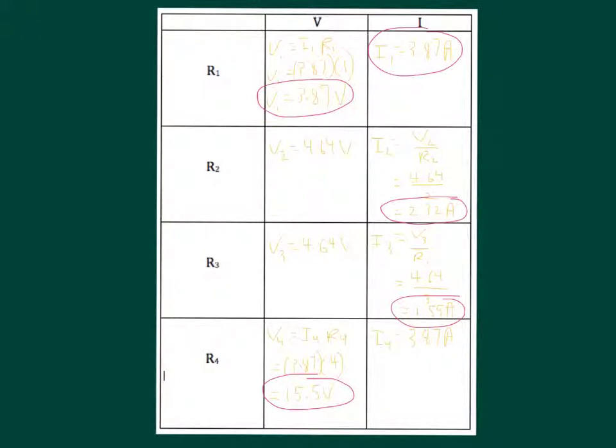We have our V1, I1, V2, I2, V3, I3, V4, and I4. By putting it into this chart, it's very easy to see that there's nothing that we've missed. We have now completely solved for this combination circuit.